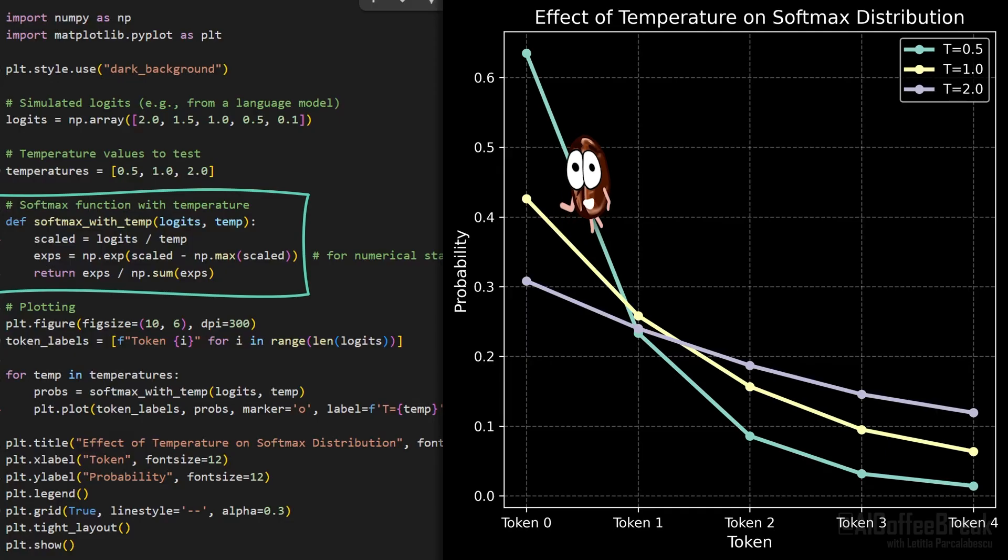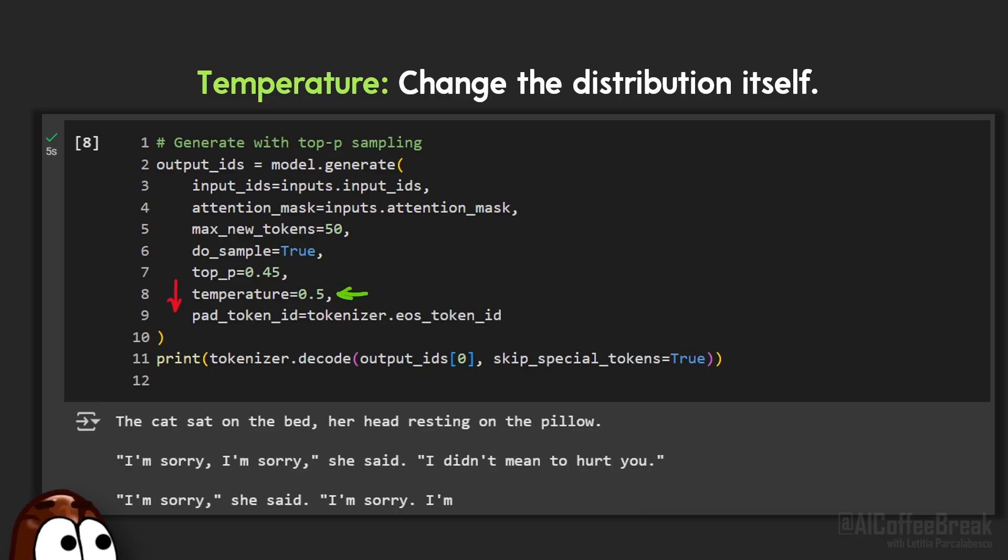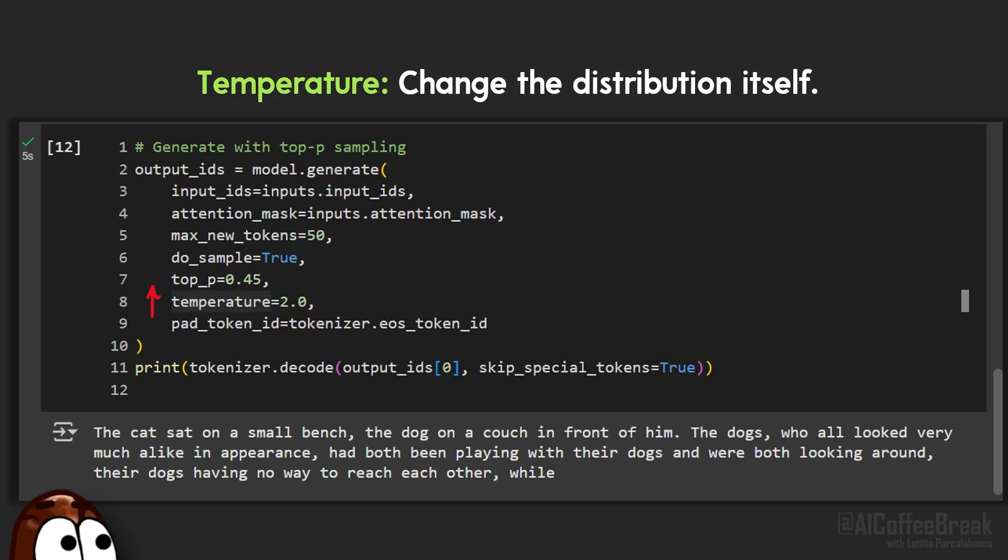A temperature below 1, like 0.5, makes the distribution sharper. We see here tokens 0 to 4, which we have sorted according to imaginary probabilities. As you see, a temperature of 0.5 exaggerates the differences between high and low probabilities, making the model more confident and conservative. A temperature above 1, like here 2, does the opposite. It flattens the distribution, making rare tokens more likely and injecting more randomness into the sampling. So set a temperature low for precise answers, set it high for more playful or surprising responses. And you can combine it with any of the other strategies we've seen so far, like top-p or top-k, to get the variety you want.